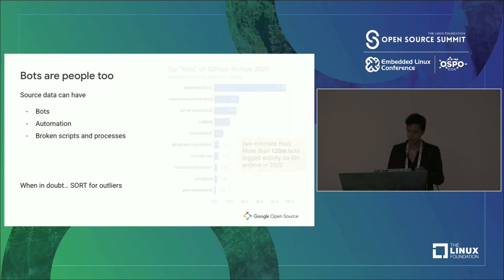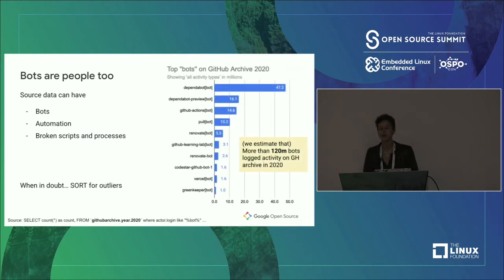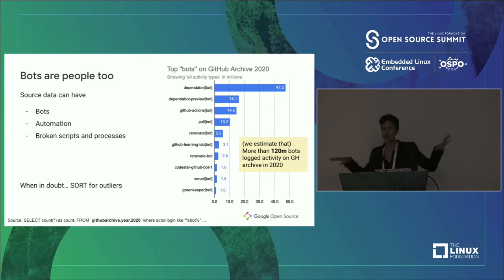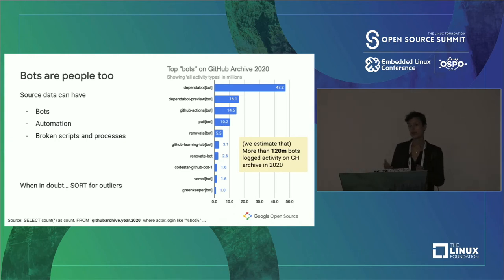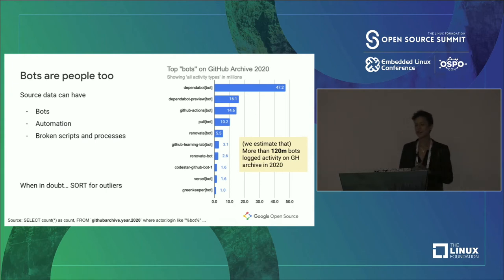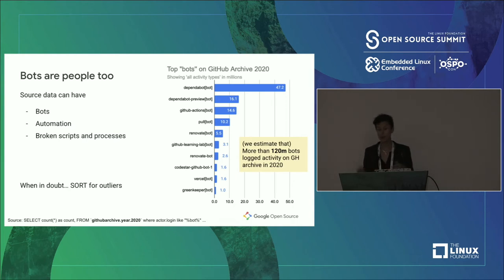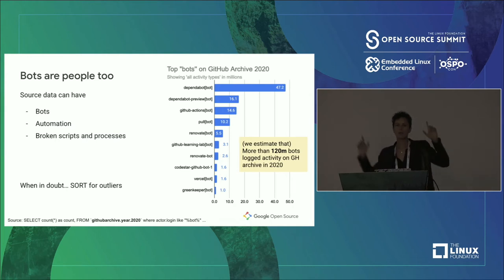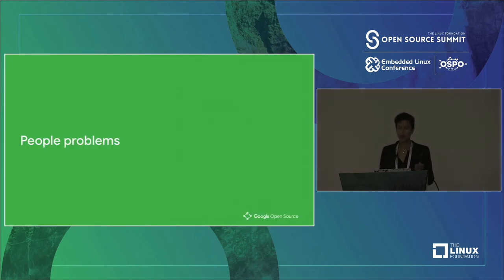I was curious to know how many bots there are in GitHub Archive in 2020. I wrote a basic SQL script identifying bots by finding 'BOT' in the actor login or user handle. So if anyone has a handle with 'BOT' in it, I'm counting you — there's a little bit of flaw here. Using this script, we estimate over 120 million bot-based accounts logged activity on GitHub in 2020. The top 10 that popped up include dependabot, GitHub Actions pull bots, and others — and thank you to everyone who puts 'bot' in the title, because right now that's the best way to identify them.